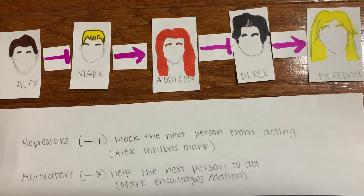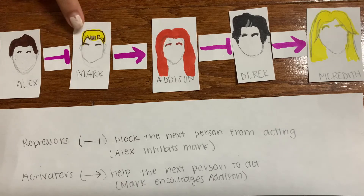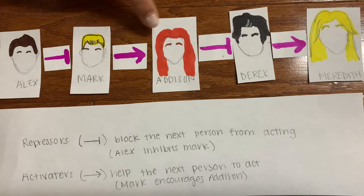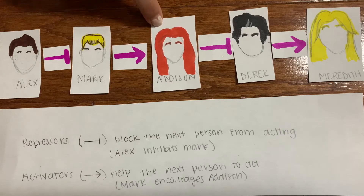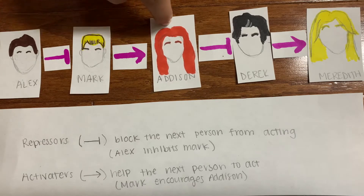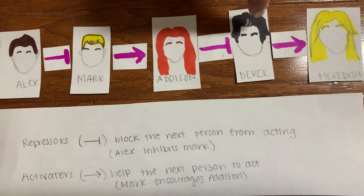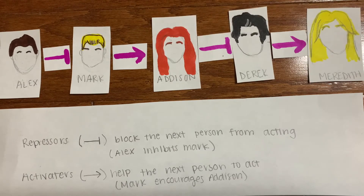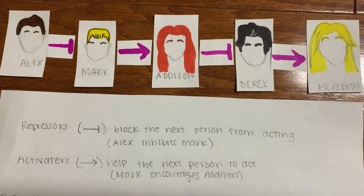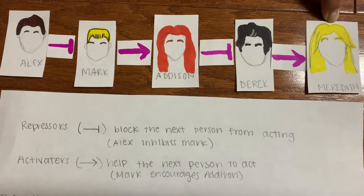From this developmental network, you can see that the Alex gene product inhibits the Mark gene product, that the Mark gene product activates the Addison gene product, Addison inhibits the Derrick gene product, and Derrick activates the Meredith gene product. All of these characters have an effect on whether the Meredith gene product becomes a doctor.